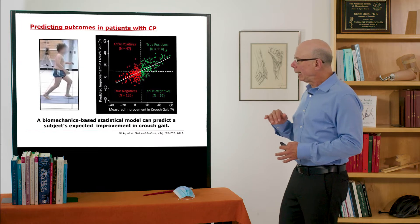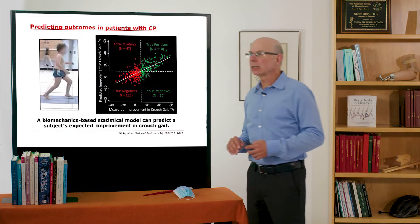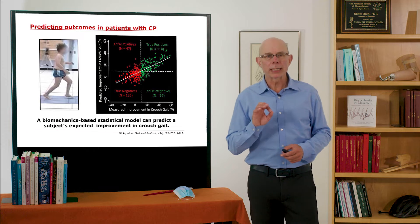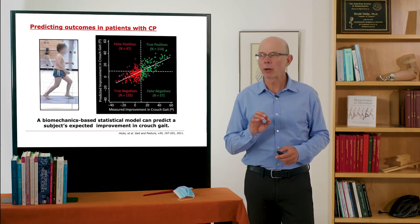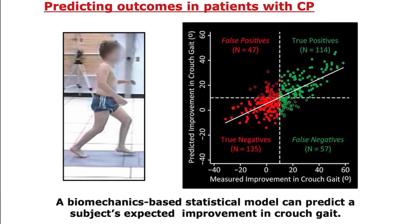So what we did here was a biomechanics-based statistical model to predict a subject's expected outcome. And what I'm showing here is in green, the true positives, and in the red down here, the true negatives.